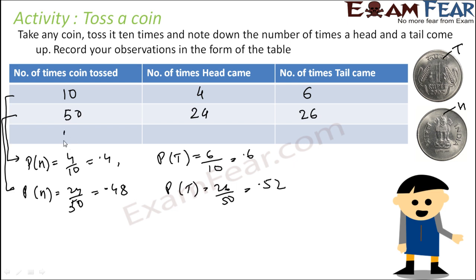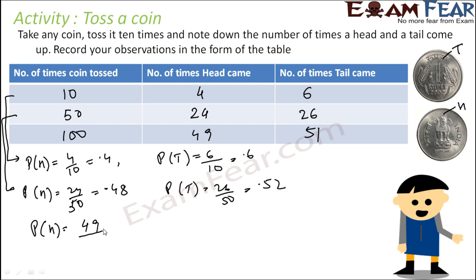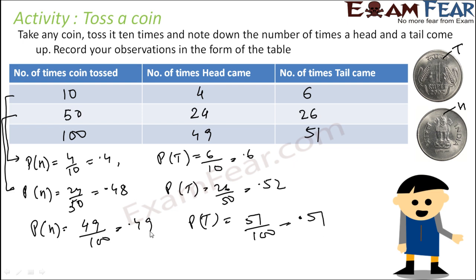Let us do the experiment 100 times. If we do the experiment 100 times, you may get 49 times head and 51 times tail. The probability of head is 49 by 100, that is 0.49, and probability of tail is 51 by 100, that is 0.51. You see, the numbers are approaching 0.5 — going from 0.52 to 0.51, then to 0.5.